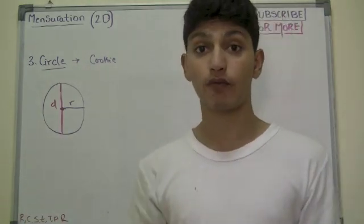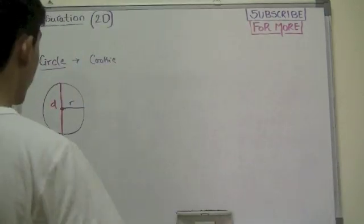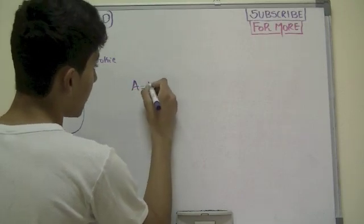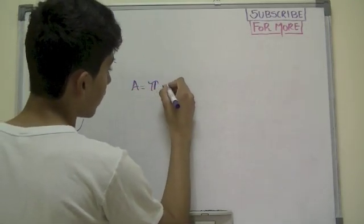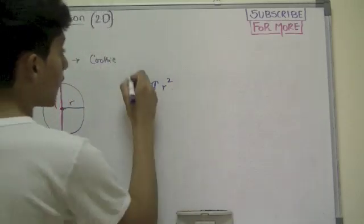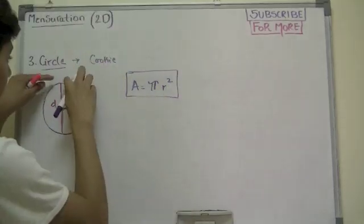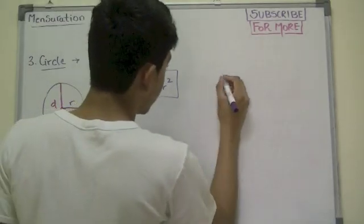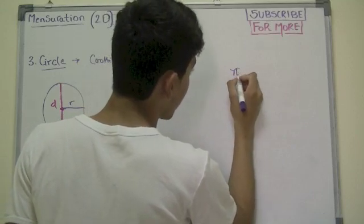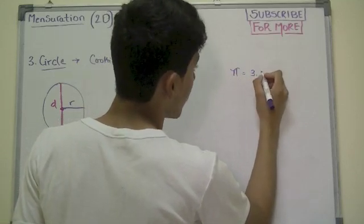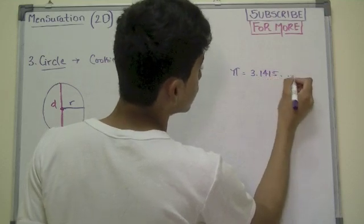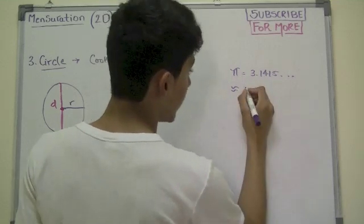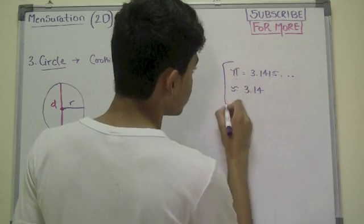Knowing this information, we can come up with a formula for area. The area, which is the shaded area here, would be π r². Pi has a certain value. Pi is basically the length of the whole figure. Pi represents 3.1415 and so on. But approximately, it's calculated as 3.14.